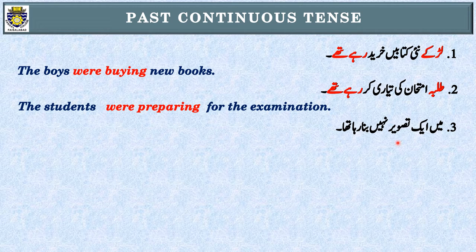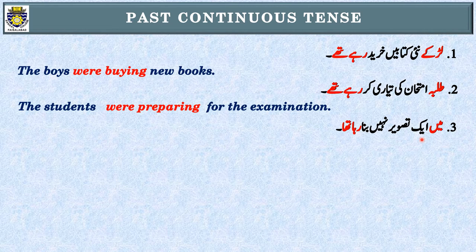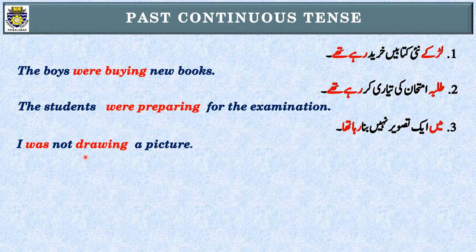Sentence number three: مَیں ایک تصویر نہیں بنا رہا تھا۔ First step: 'رہا تھا' سے پتہ چلا — یہ Past Continuous Tense ہے۔ Second step: subject — 'مَیں'، جس کی English I ہے۔ Third step: I کے ساتھ was use کرتے ہیں، negative ہونے کی وجہ سے was کے فوری بعد not use کریں گے: I was not drawing a picture.